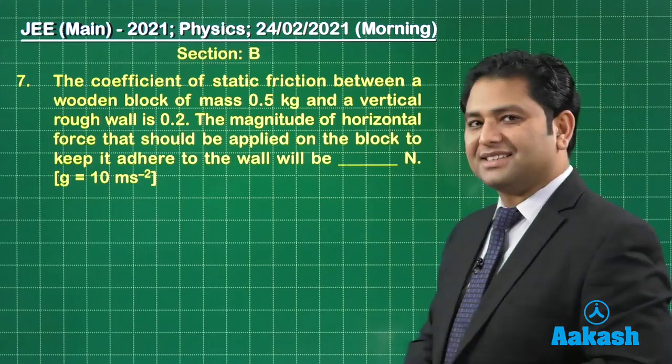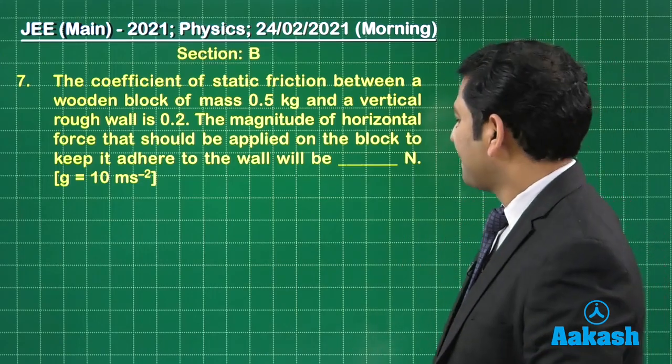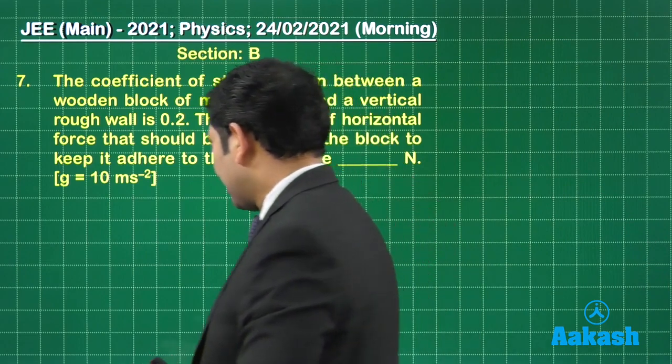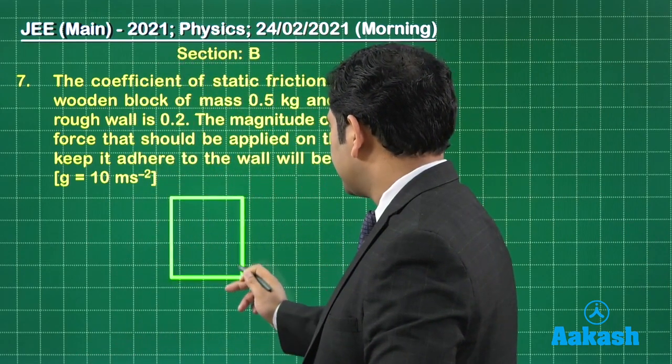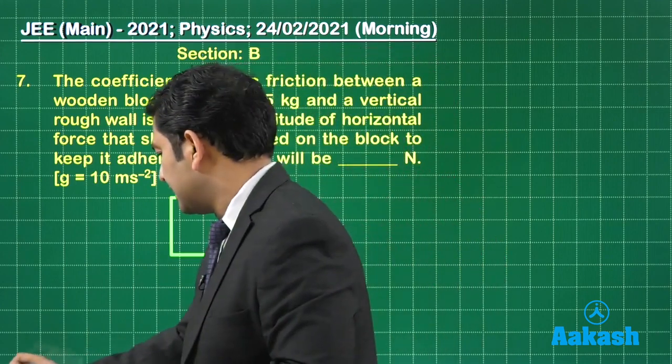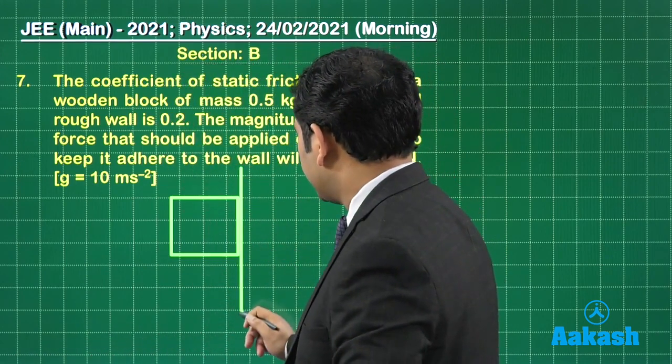The seventh question, what does it say? A straightforward one. It's from the laws of motion, categorically friction is involved. Now based on what the question says, let's draw a figure here.